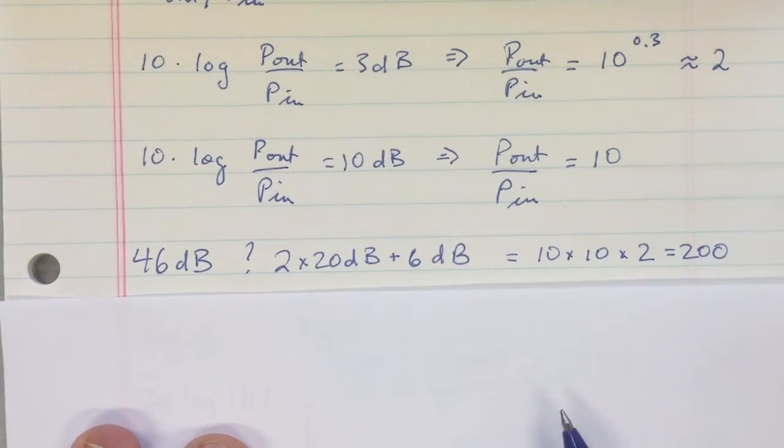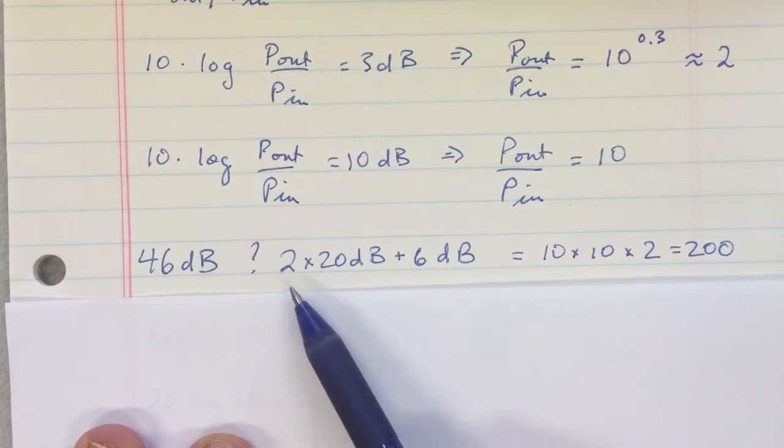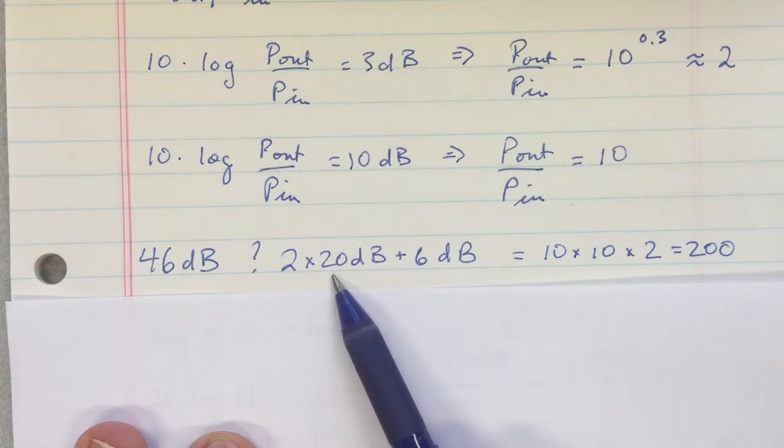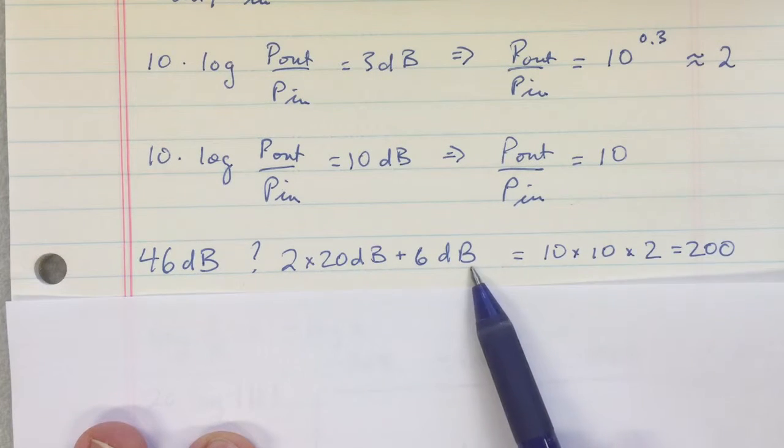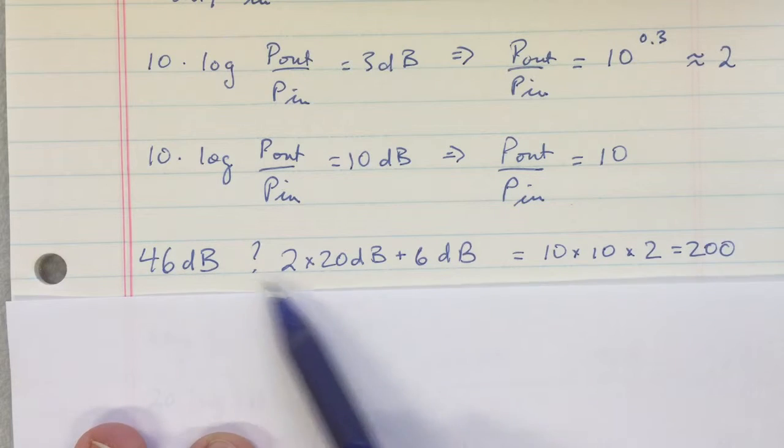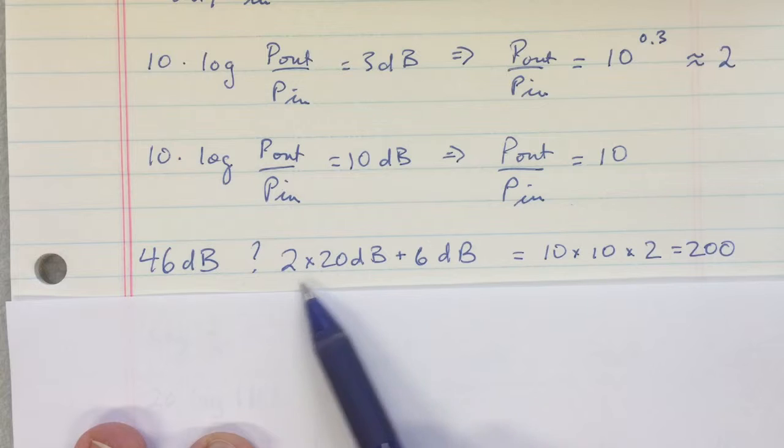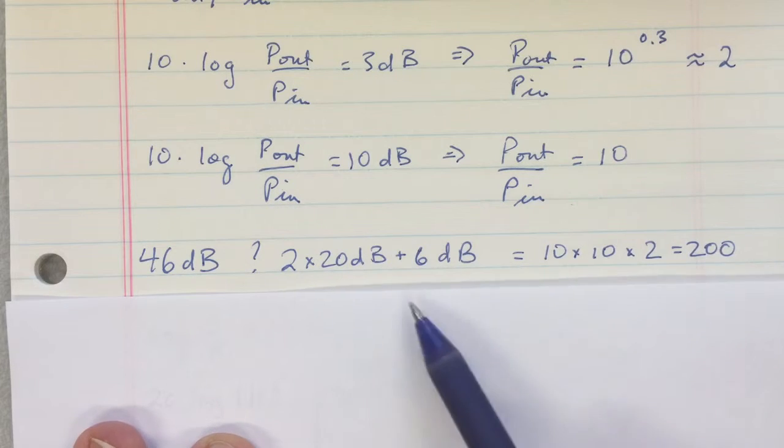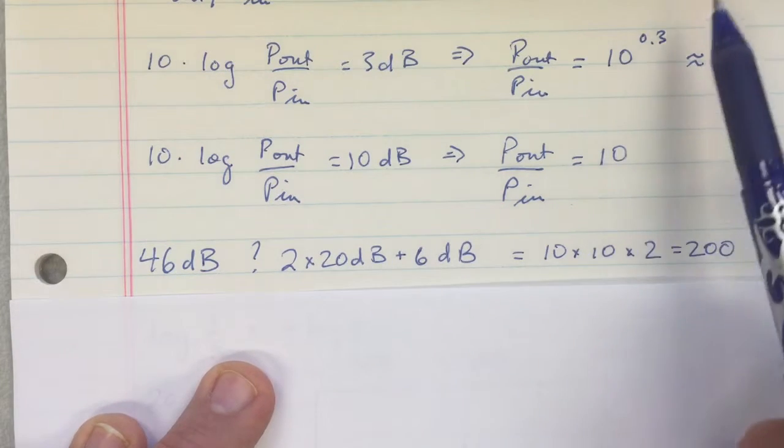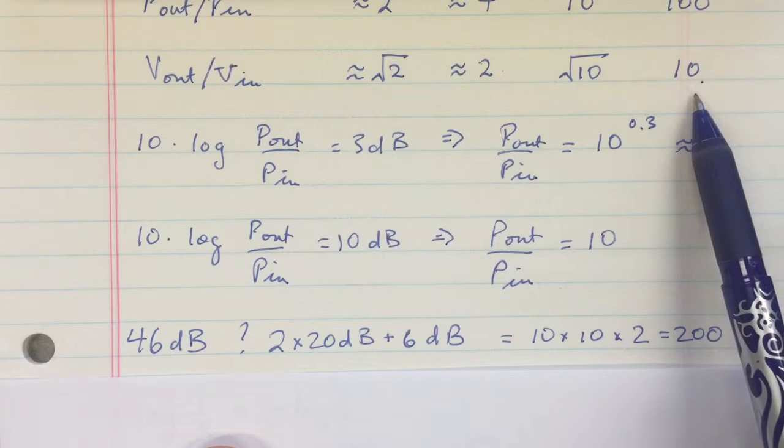Okay, so let's take an example. Suppose you have 46 dB. That's going to be like two times 20 dB plus 6 dB. Because the power ratio in decibels—the decibel value—is sum. Each of these 20 dBs corresponds to one order of magnitude increase there.